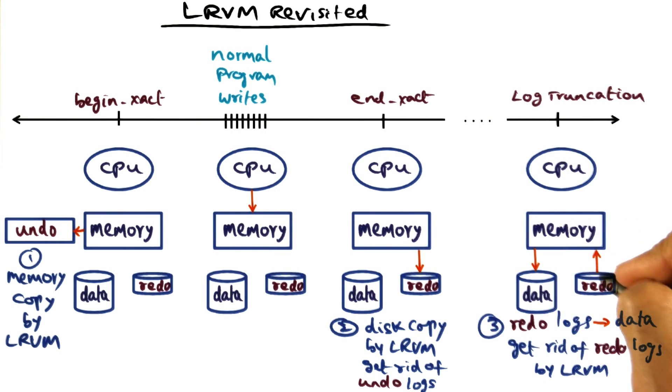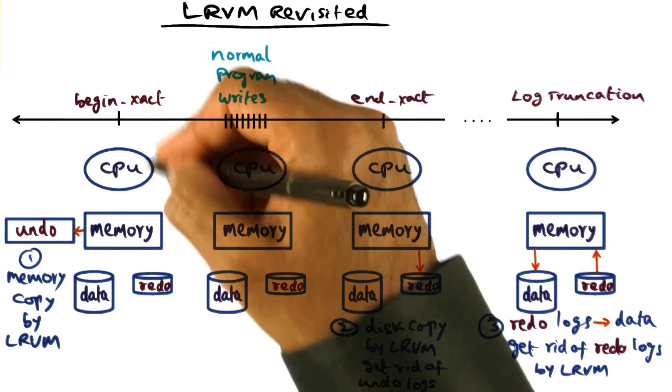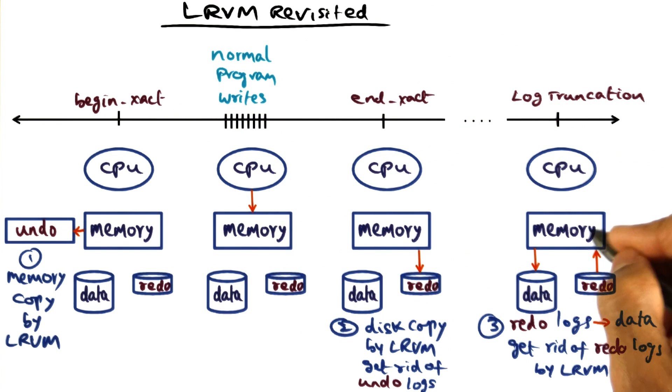And we know as a background activity, what LRVM does is to update the original data segments with the changes that have been recorded in the redo logs because, as you recall, the data segment contains a persistent data which have been brought into memory and modified during this transaction.